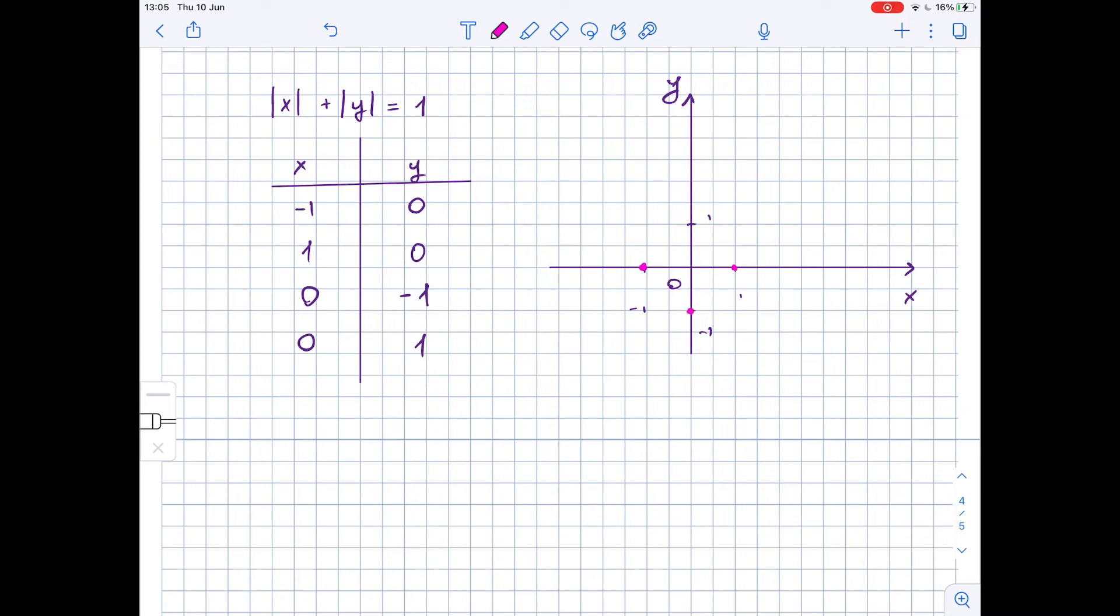And we also have 0, 1. So basically, if we connect these points, we get something like this. So the graph of this relation looks like this.